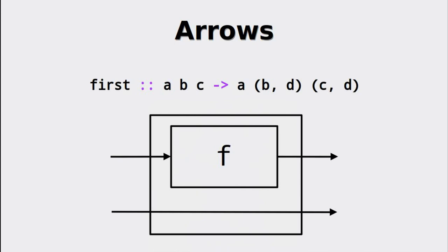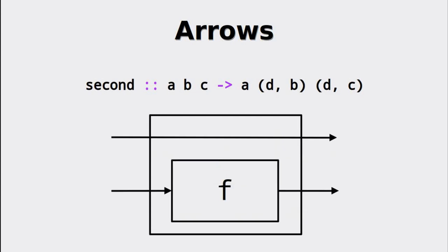first is our first combinator. It takes an existing arrow and creates a new arrow that works on tuples. The supplied arrow is used in order to change the value of the first element. Working on tuples is useful because we can split the data flow of our computations and represent them as tuples.